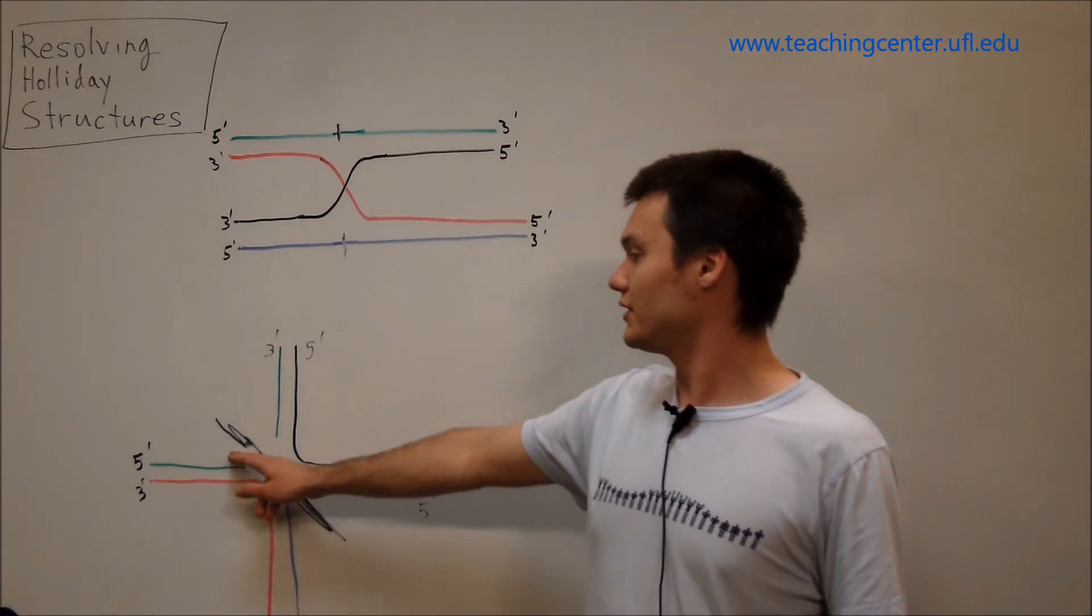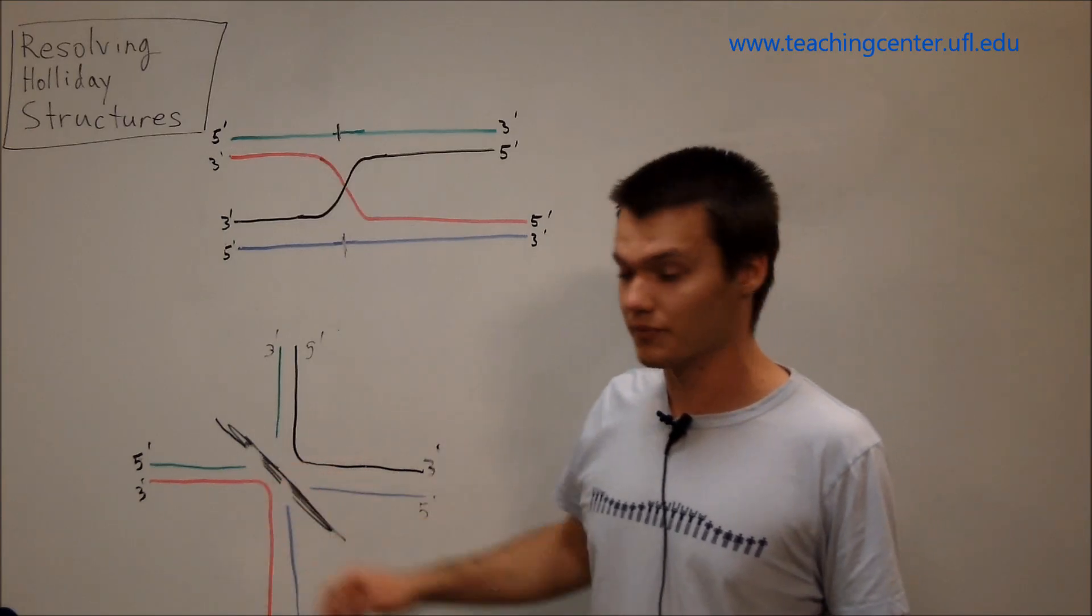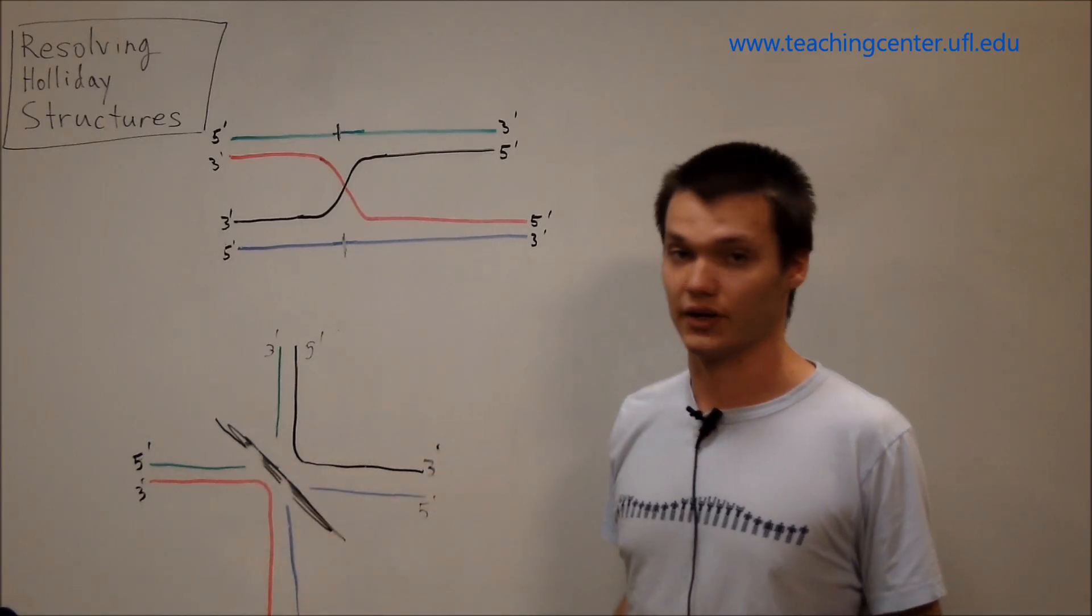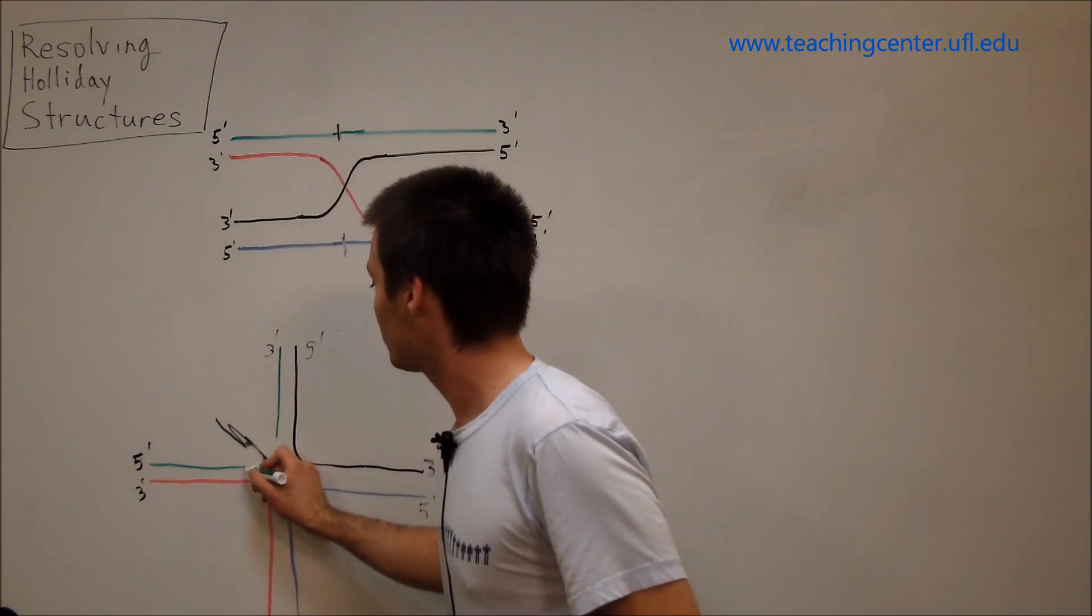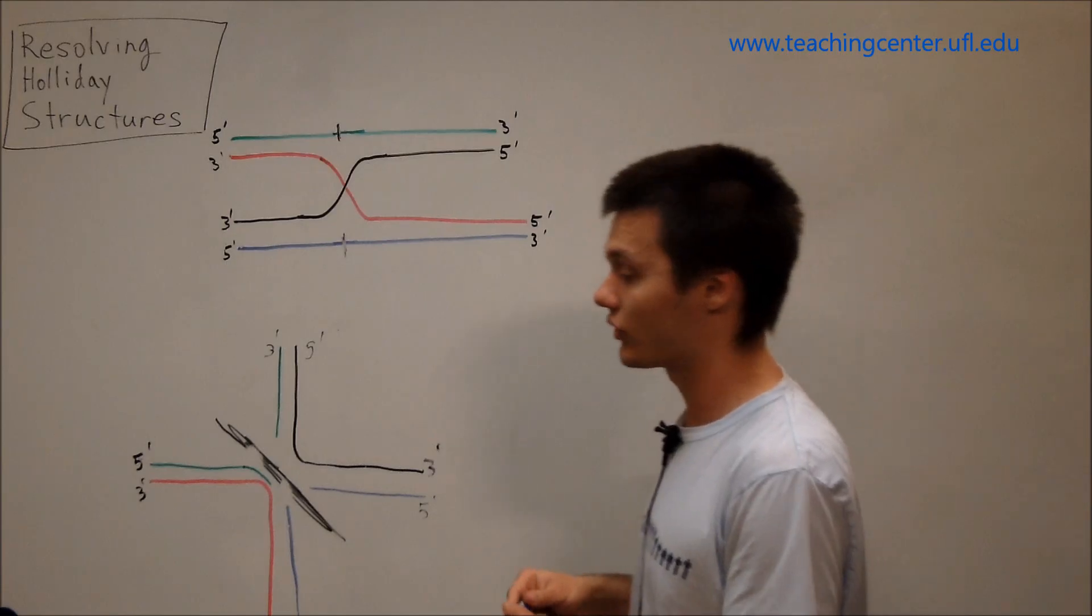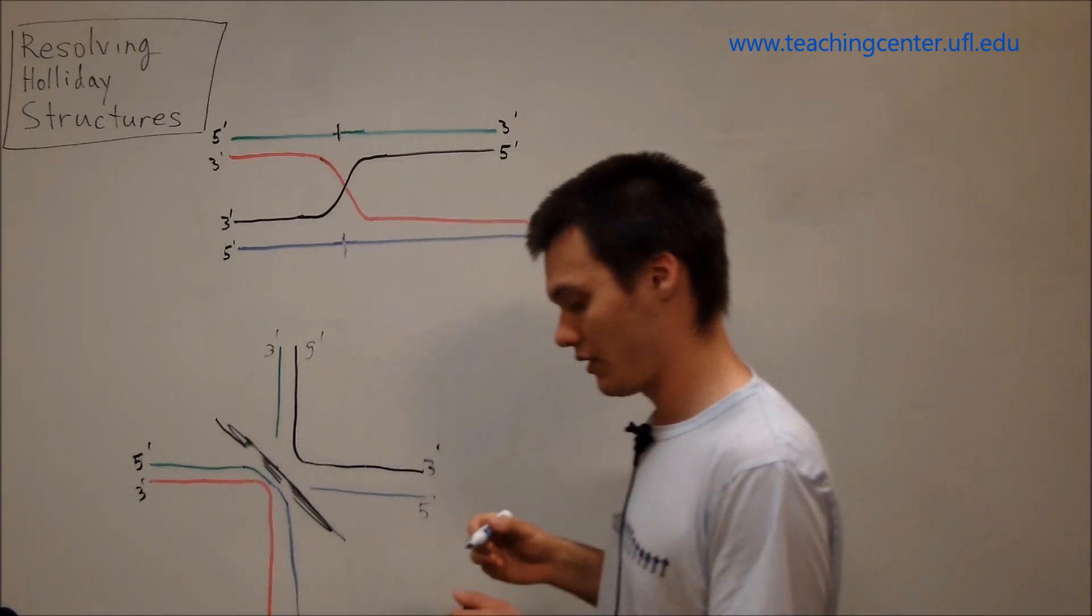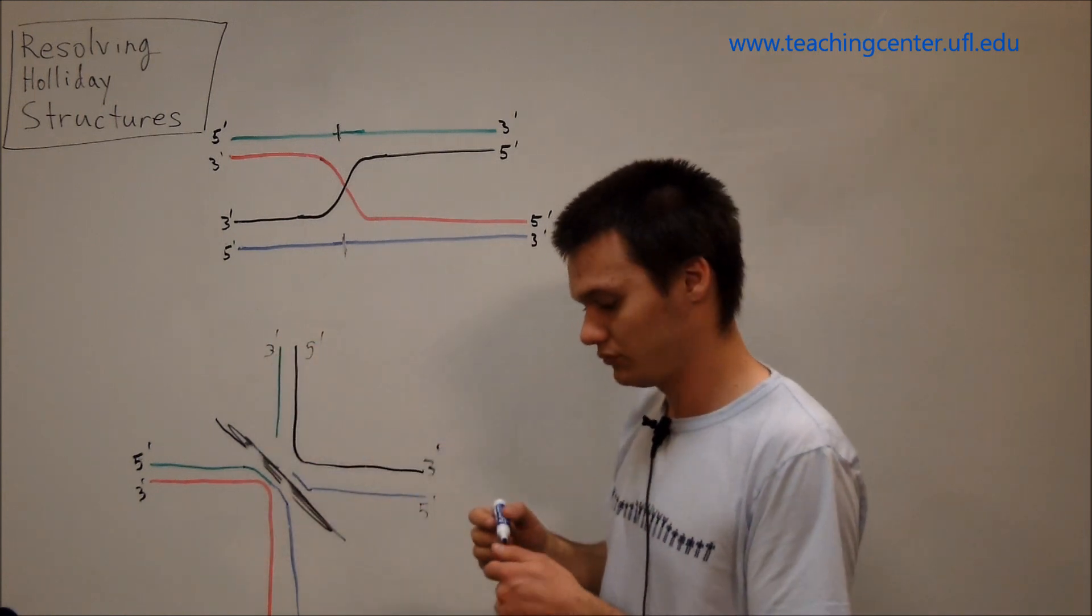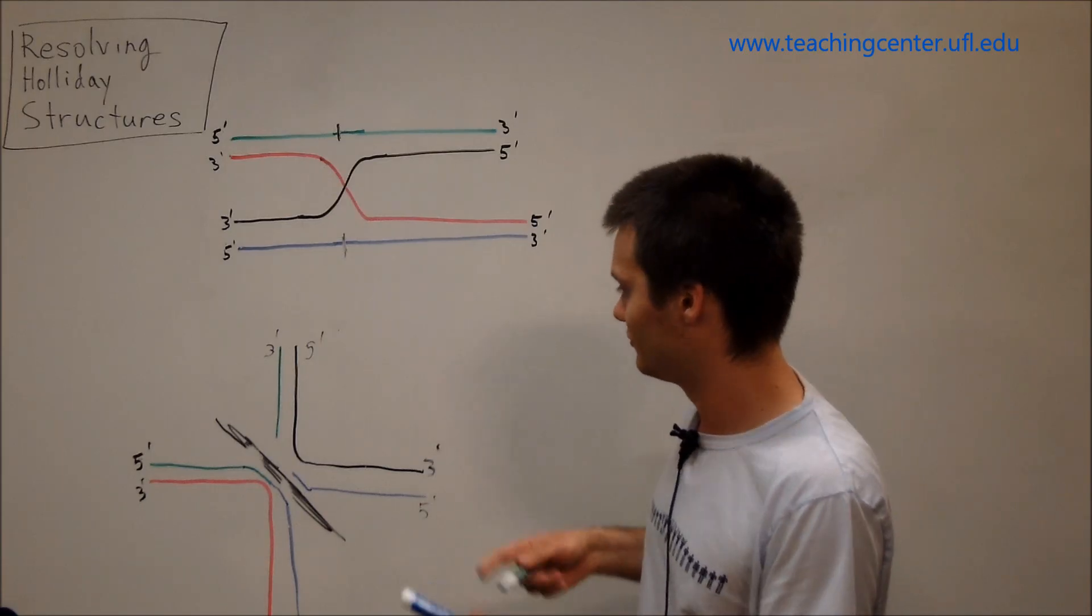Now, notice I did erase a little bit of my little divider, but that's okay, it's still there. And it helps remind me to join this strand with this strand. So, let's do exactly that. Five prime to three prime, five prime green to three prime blue, and three prime green to five prime blue. There we go.